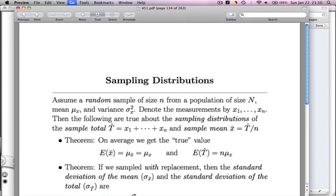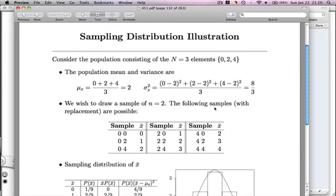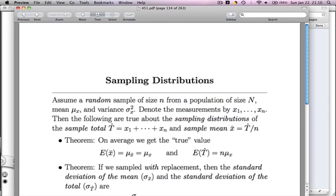So we've already seen a very concrete example of this two slides ago. Remember, the mean of the sampling distribution was two, which was the true mean of the population. For a total, you multiply through by n, and so the expected value of the total is just n times mu.